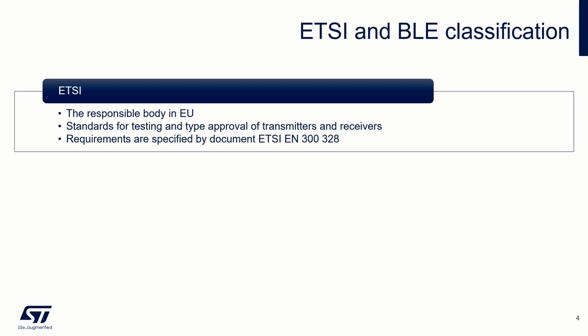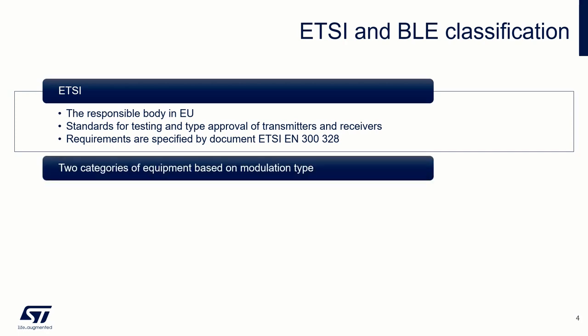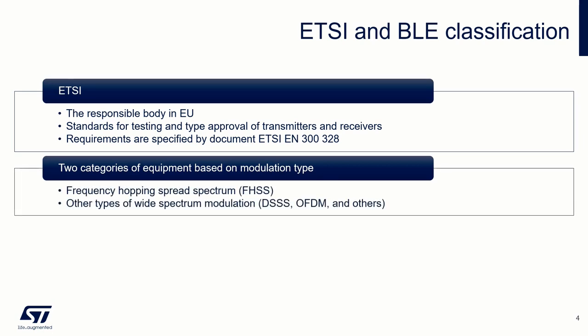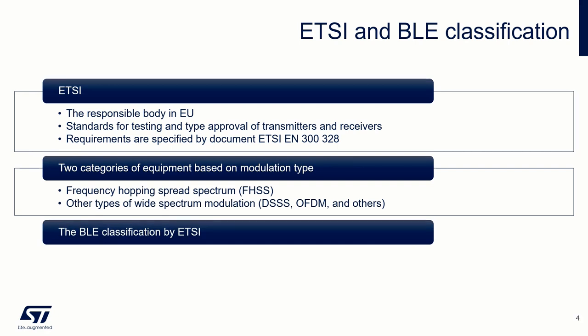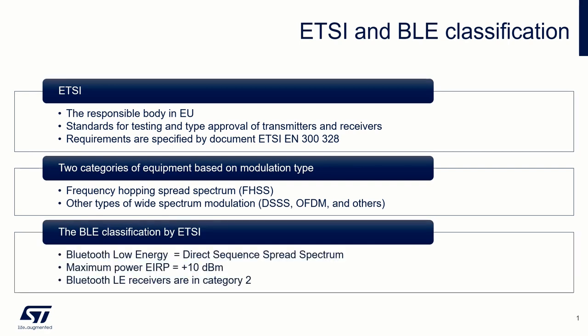This standard defines two categories of equipment based on modulation scheme: frequency hopping spread spectrum and other types of wide-spectrum modulation. ETSI defines the BLE device as DSSS — direct sequence spread spectrum — technology with adaptive system. Concurrently, BLE is classified with a maximum power of plus 10 dBm EIRP.